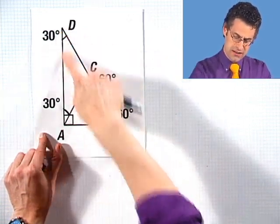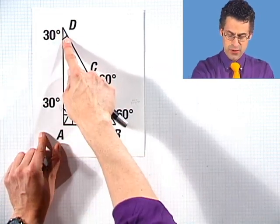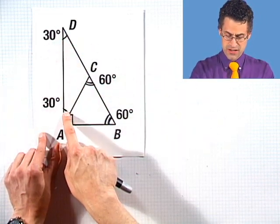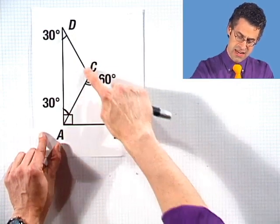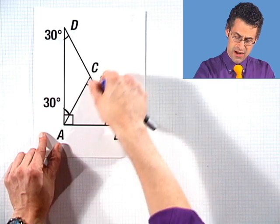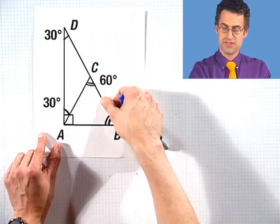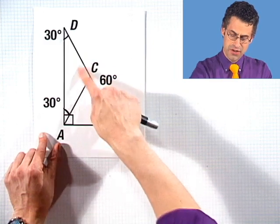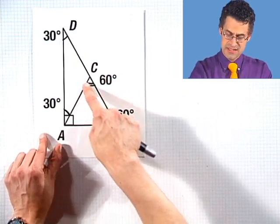Now, what about the only triangle left over, triangle ACD? Well, I see this is 30 degrees, and this is 30 degrees in measure. And what is the measure of angle ACD? Well, notice that this angle right here and this angle right here are supplementary angles. So I know that the sum of both of those together is 180.